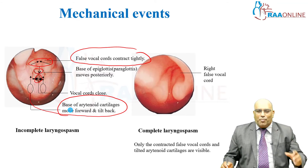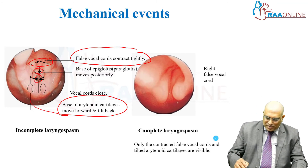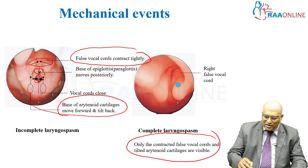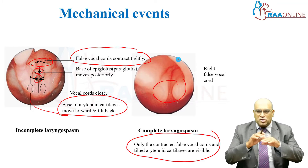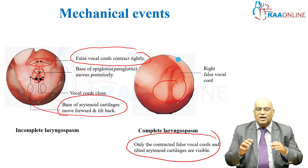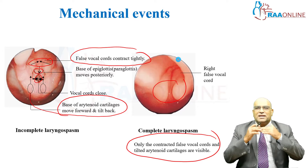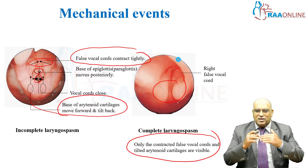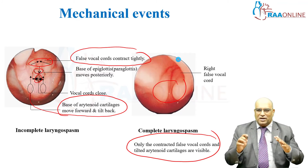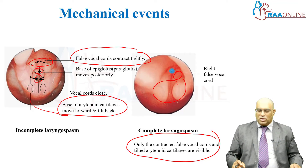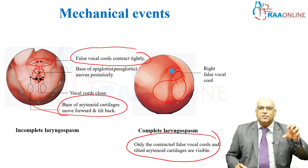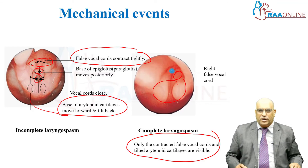With complete laryngospasm, you can see only the contracted false vocal cord and tilted arytenoid cartilage. Here you can see the right false vocal cord, which is very prominent.